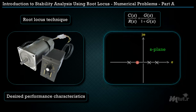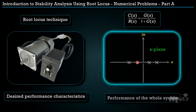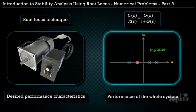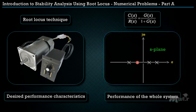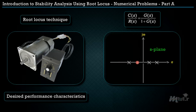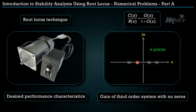With the help of the root locus, we can easily predict the performance of the whole system. This video will help you find the gain of the third-order system which doesn't have zeros using the root locus technique.